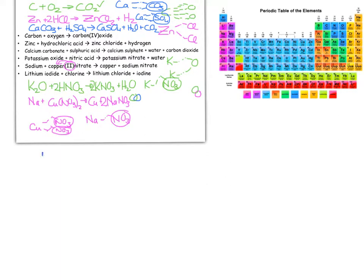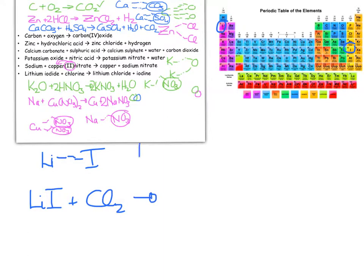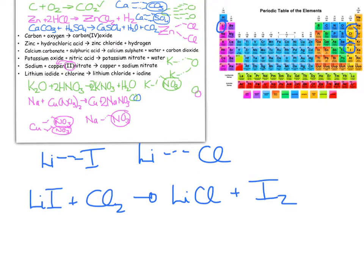Lithium is in group 1, valency 1. Iodide — iodine is in group 7, valency 1 — so lithium iodide is LiI. Plus chlorine, which is diatomic Cl₂ when on its own. Products: lithium chloride LiCl (both Li and Cl have valency 1), plus iodine I₂. Balancing: put a 2 in front of LiI and LiCl — now 2 lithiums, 2 iodines, and 2 chlorines on each side. Balanced.